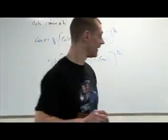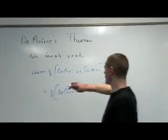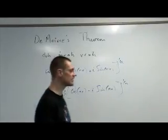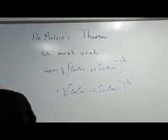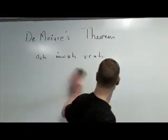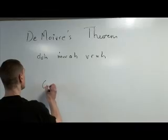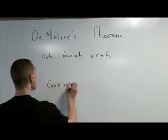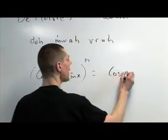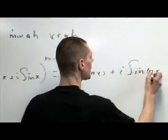De Moivre's Theorem is listed on the web page as this, of course. But here is what we talked about and this is how you're going to use it. Be shocked and amazed by: (cos x + i sin x)^n = cos(nx) + i sin(nx). And I want you to think about how amazing this is.